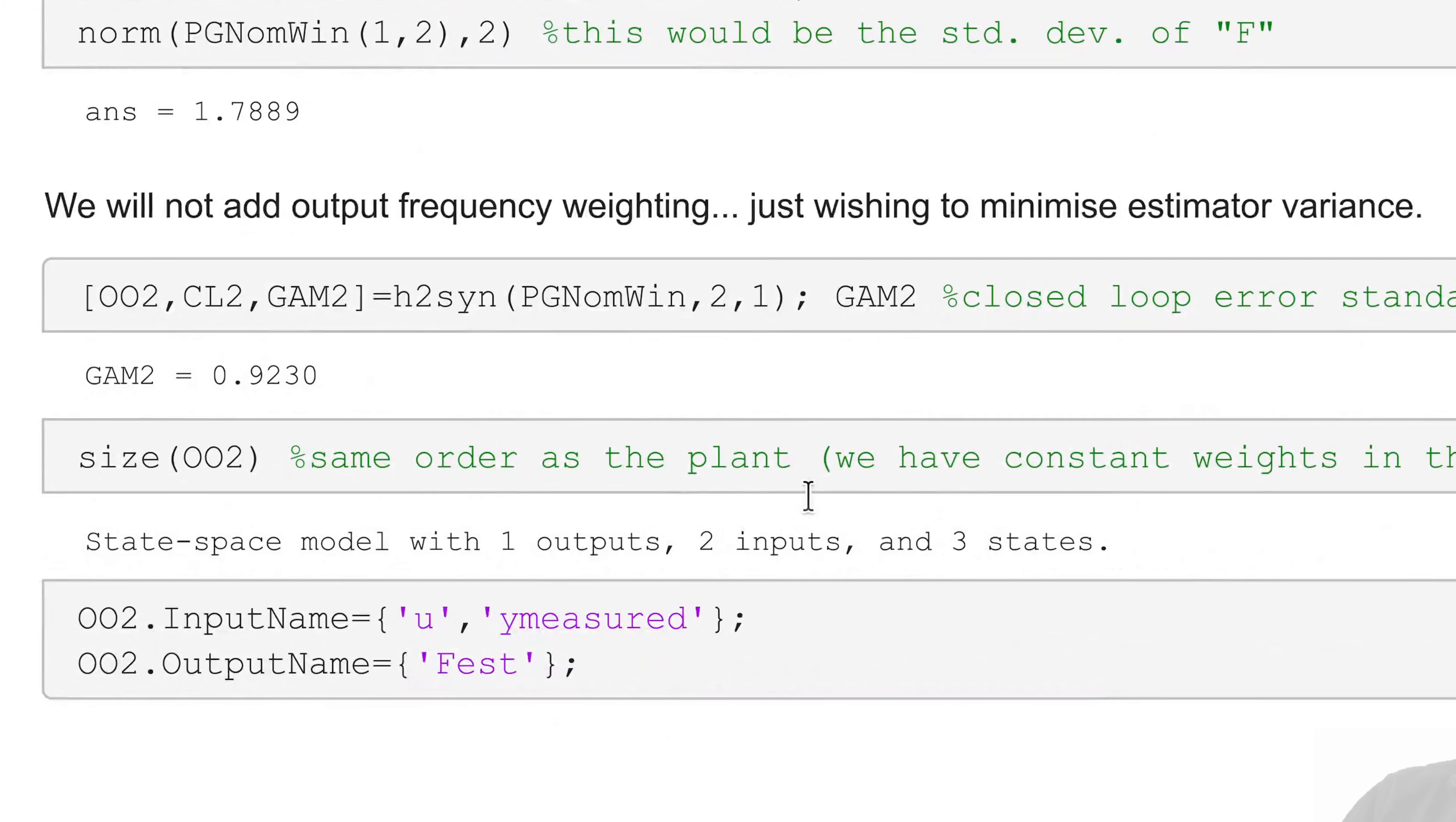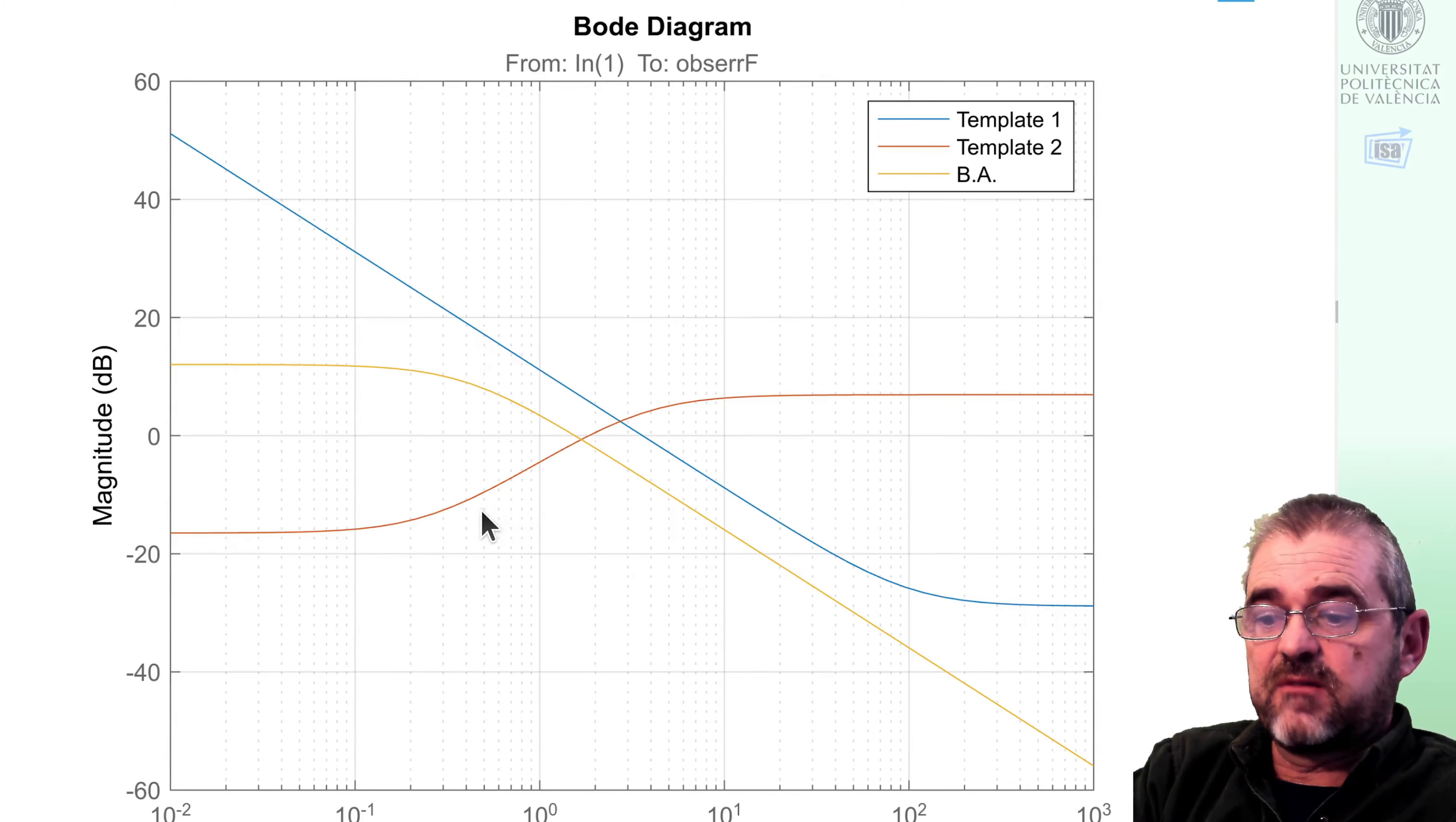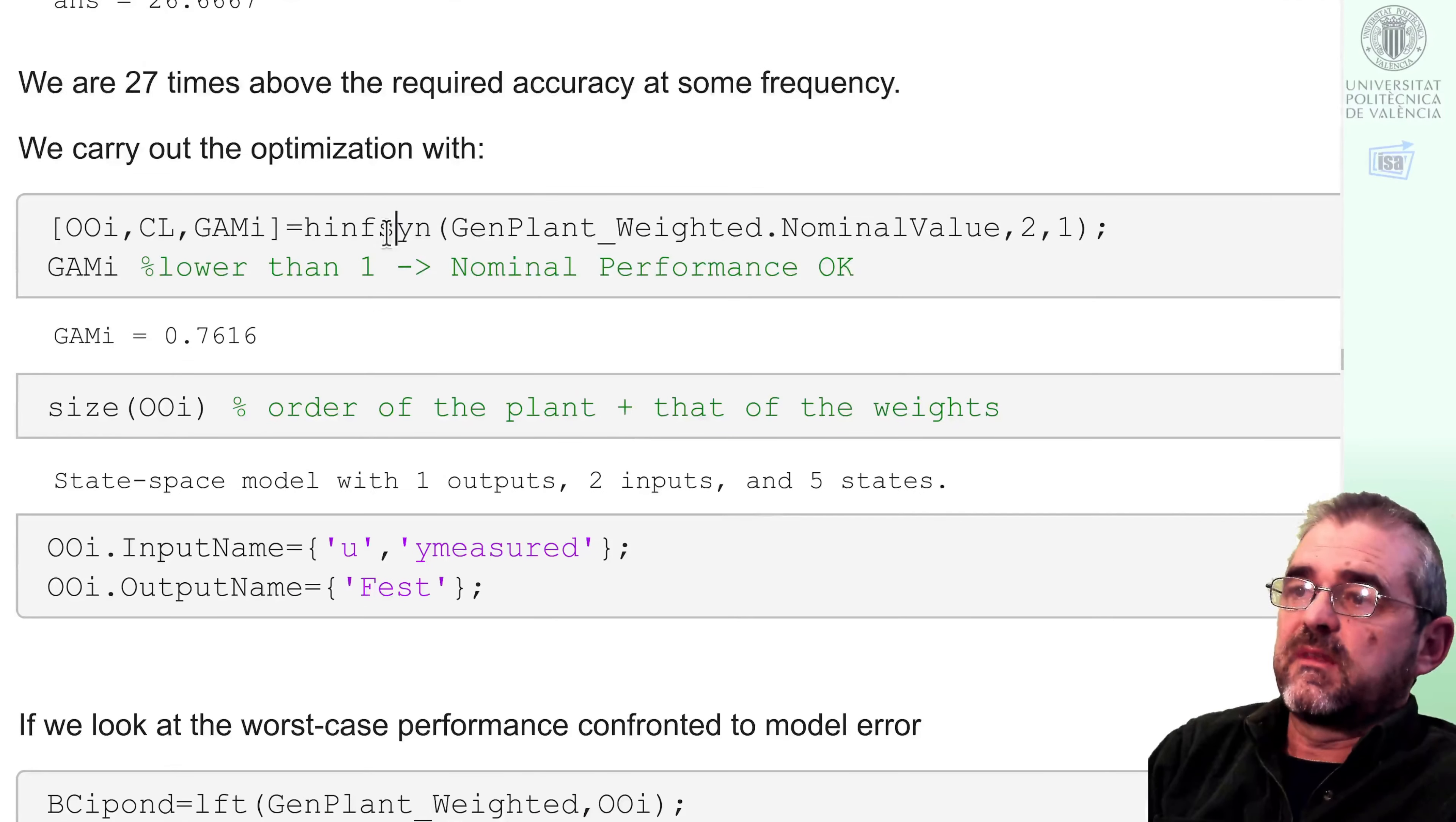H2 synthesis had only constant input weights and we got some optimal H2 controller, minimum variance of the estimation error, but H infinity and mu synthesis added some output weights because we asserted that our goal was achieving a worst-case amplitude of the estimation error below this thick red line, the minimum of two templates.